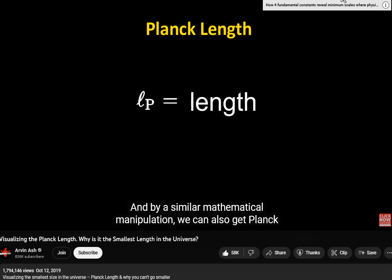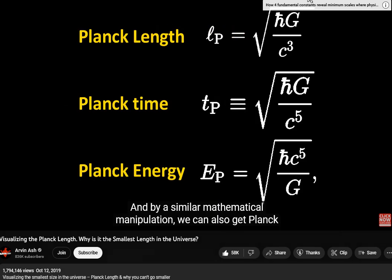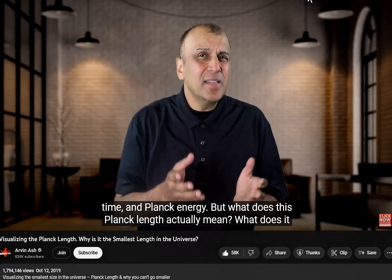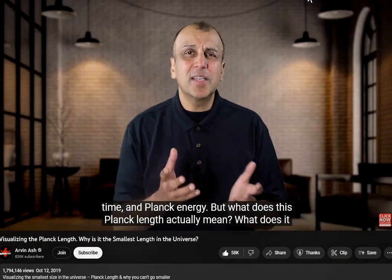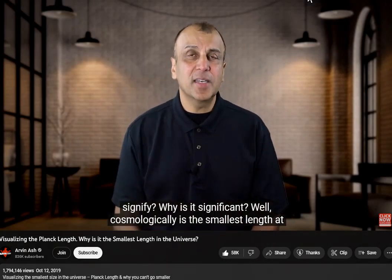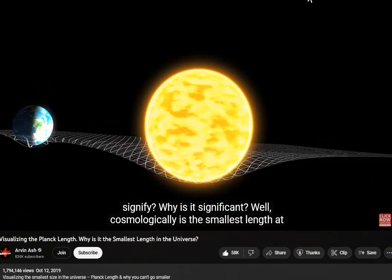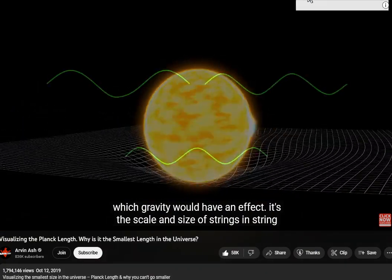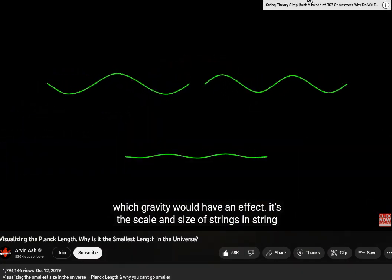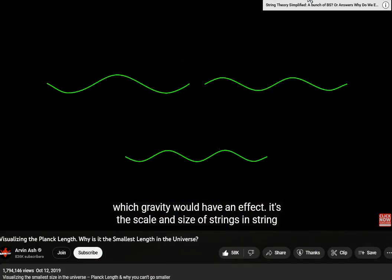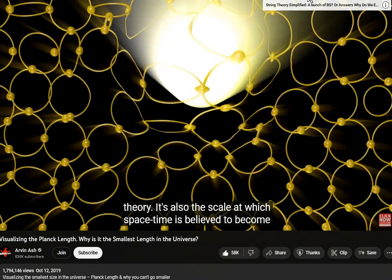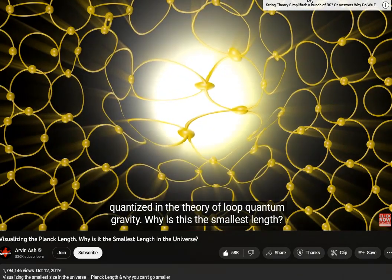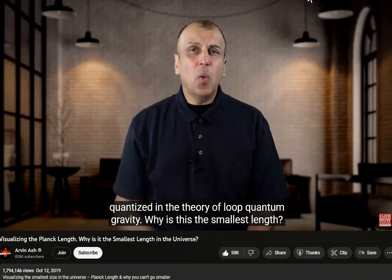By a similar mathematical manipulation, you can also get Planck time and Planck energy. Cosmologically, it's the smallest length at which gravity would have an effect. It's the scale and size of strings in string theory. It's also the scale at which spacetime is believed to become quantized in the theory of loop quantum gravity.